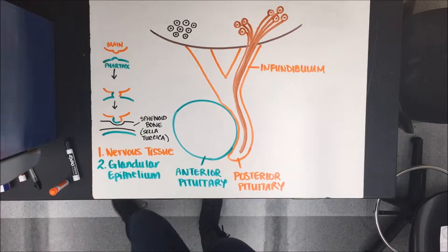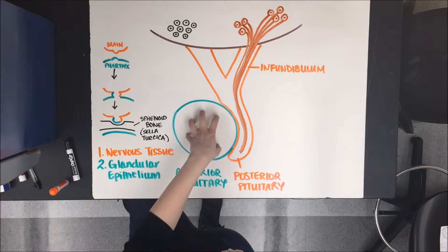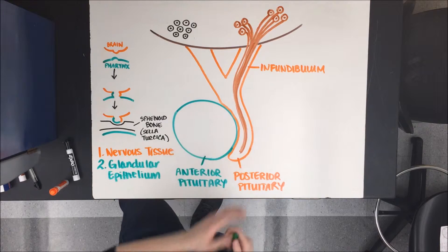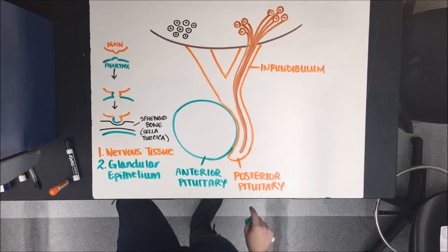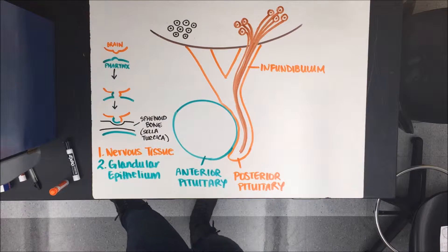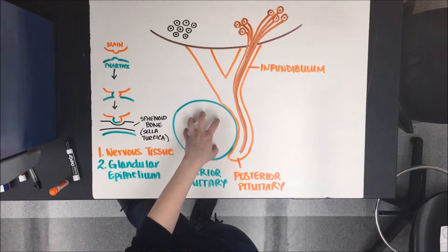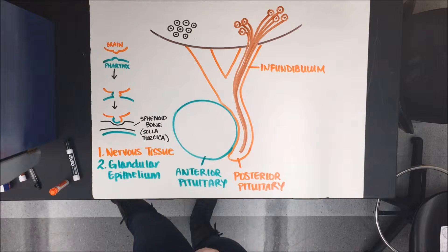The anterior pituitary is larger by weight, and because it's glandular epithelium it actually produces its own hormones, whereas the posterior pituitary does not produce its own hormones but it does release them. Just know that the anterior pituitary does produce its own hormones — that's important.